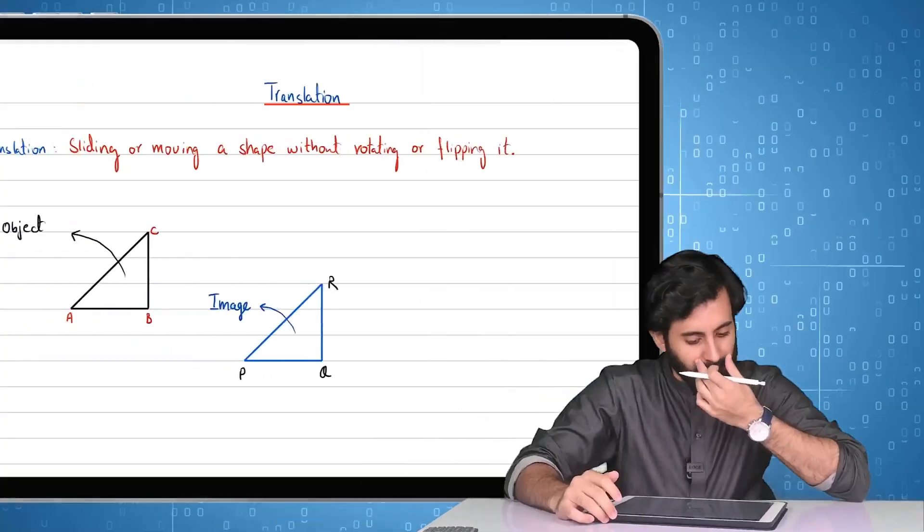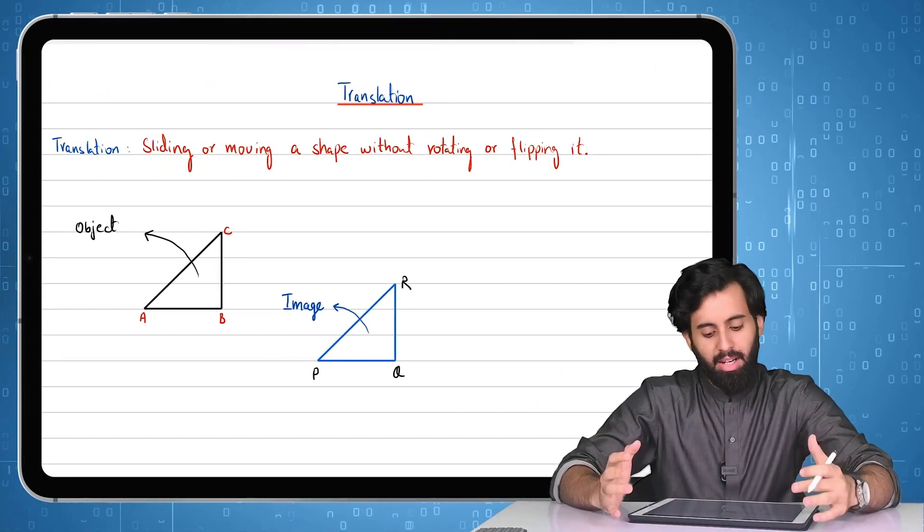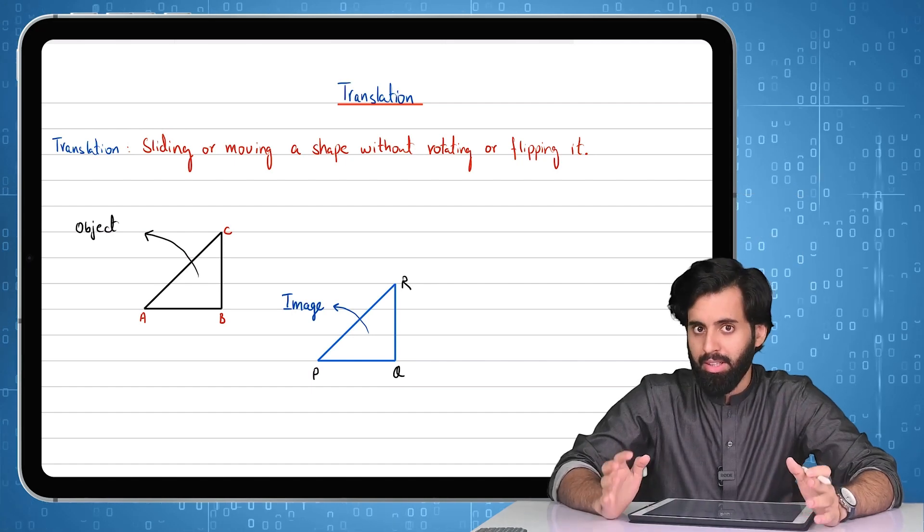In this video, we're going to do the third component of transformation and that is translation. Now what is translation? I've written the definition here. In translation, you can think of it as sliding or moving a shape without rotating it or flipping it.